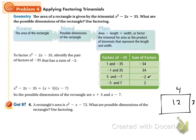If we have a rectangle whose area is x squared minus x minus 72, we can factor it to be x plus something, x plus something on the sides and those will be our dimensions.